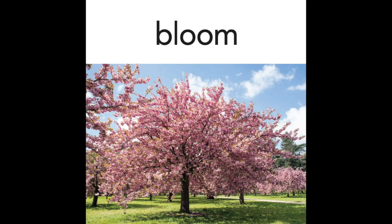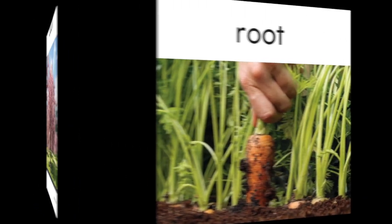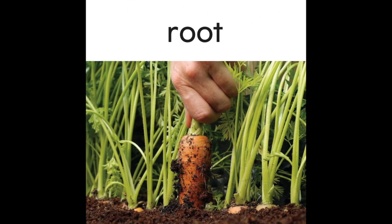Let's start by checking out the power words. First word is bloom — say it with me: bloom. When plants or trees bloom, the flowers open up. For example, this cherry tree has beautiful pink flowers when it blooms. Our next word is root — say it with me: root. A root is a part of a plant that grows underground and takes in water and food.